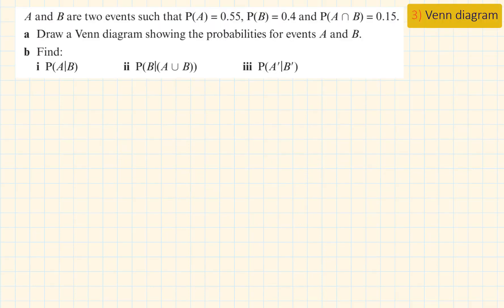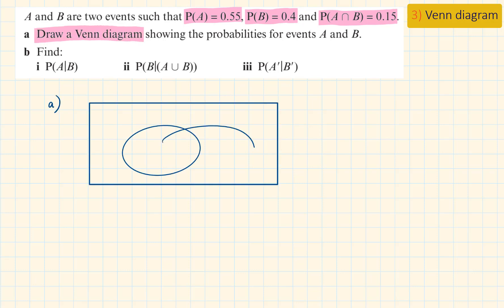Let's look at the final example. A and B are two events such that probability of A is 0.55, probability of B is 0.4 and their intersection is 0.15. Draw a Venn diagram showing the probabilities for events A and B.